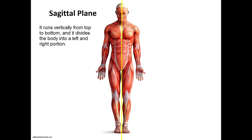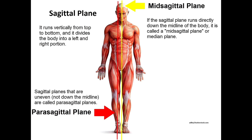You can take sagittal planes a step further and add a prefix to identify the type. A mid-sagittal or median plane is a sagittal plane that perfectly divides the body down the midline — the prefix 'mid' can remind you that it is right down the middle. A parasagittal plane is any type of sagittal plane that does not run perfectly down the midline.